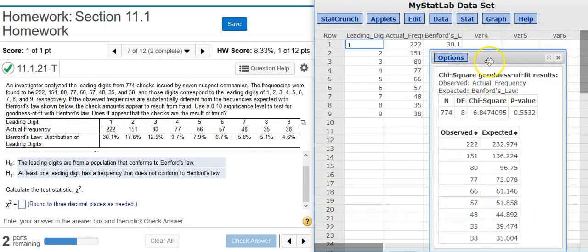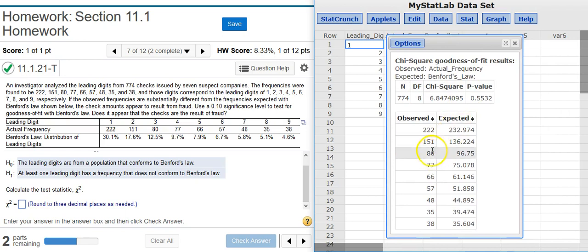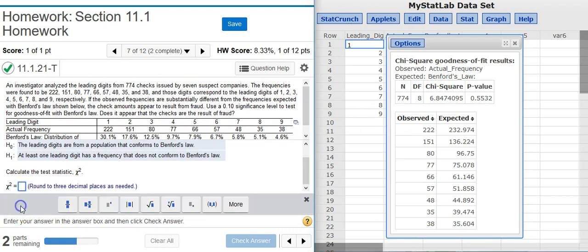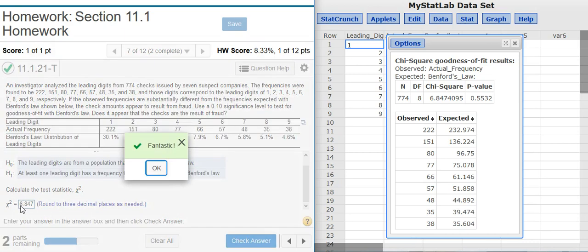And here is my results window with the test statistic and the p-value right here in this table at the top. It wants to round the test statistic to three decimal places, so that's what I'll do. Fantastic!